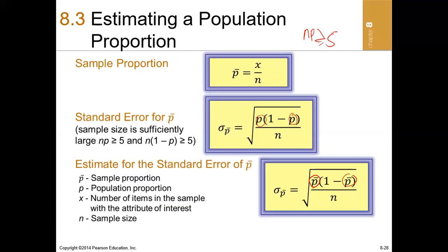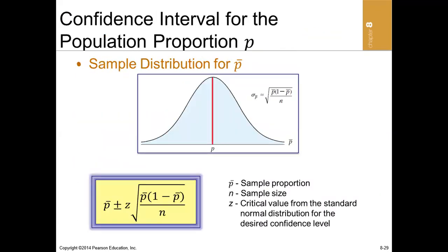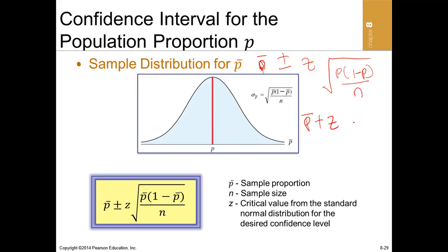To construct a confidence interval for a proportion, recall the general formula: point estimate plus or minus the critical value times the standard error. For proportions, the point estimate is the sample proportion, the critical value is the z-value, and the standard error is the square root of p(1 minus p) all over n.